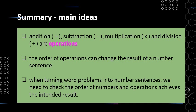Secondly, the order of operations — the order in which we put these operations — in some situations can change the result of the number sentence. Particularly with the subtraction number sentence, we saw how we got a negative result when we put the numbers in any random order.